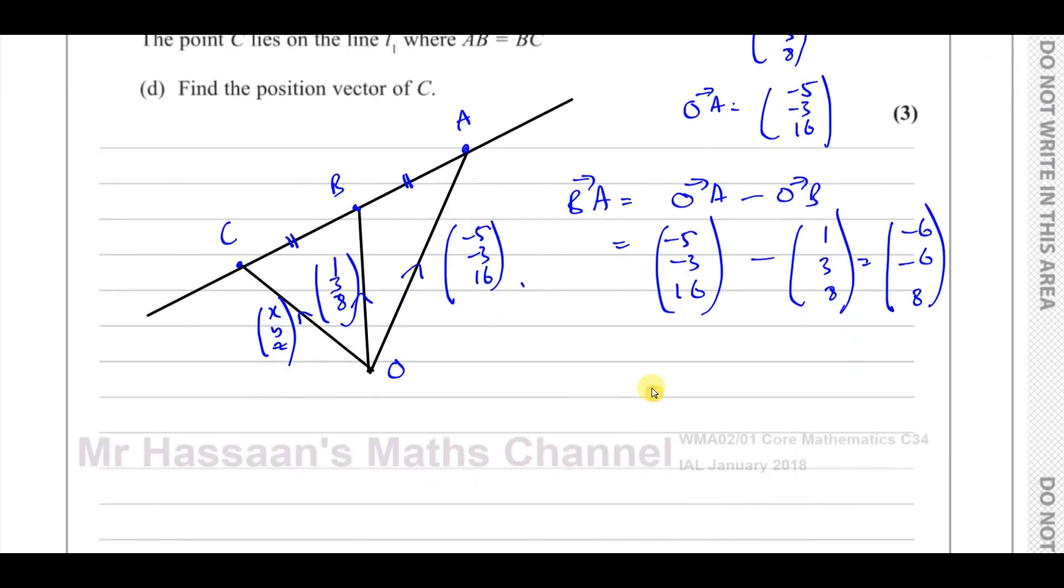Now we know that if I want to go from O to C, I've got to go from O to B, and then I've got to go from B to C. And I know that the vector B to C is the same as A to B, but negative. Negative B to A. So B to C is like A to B, which is the opposite of this. So that's going to be 6, 6, and minus 8.